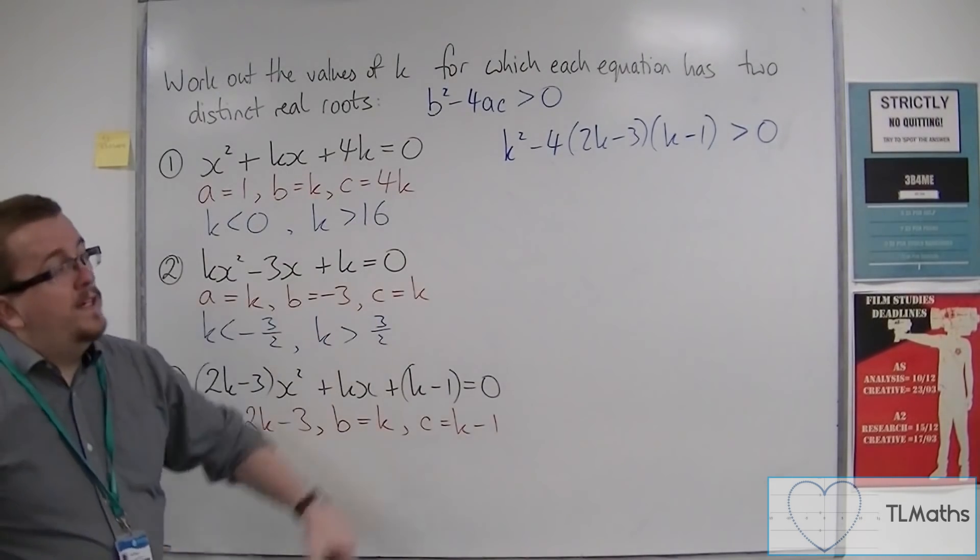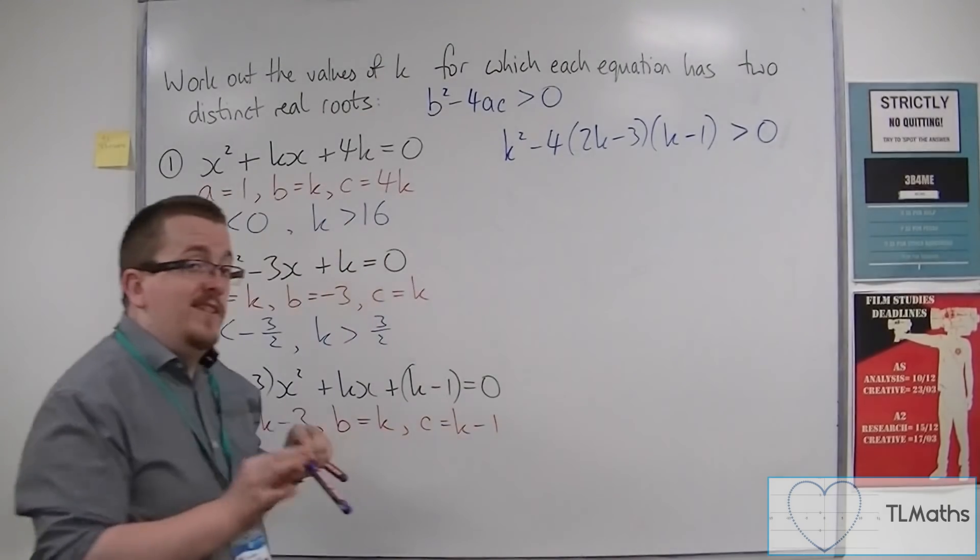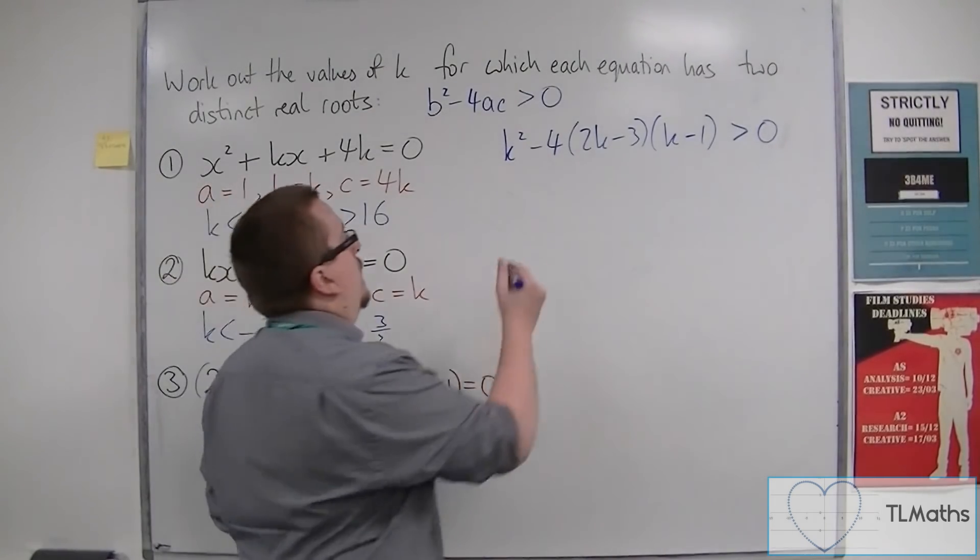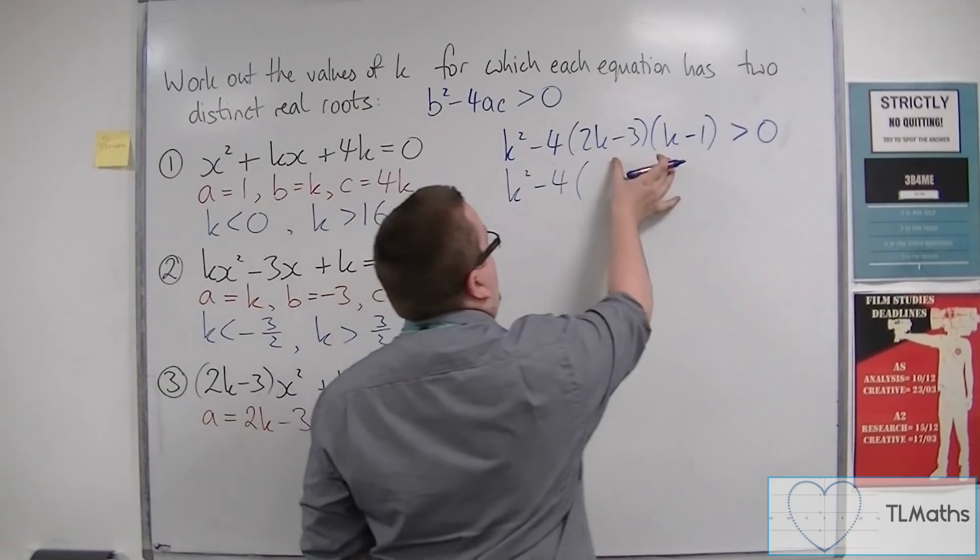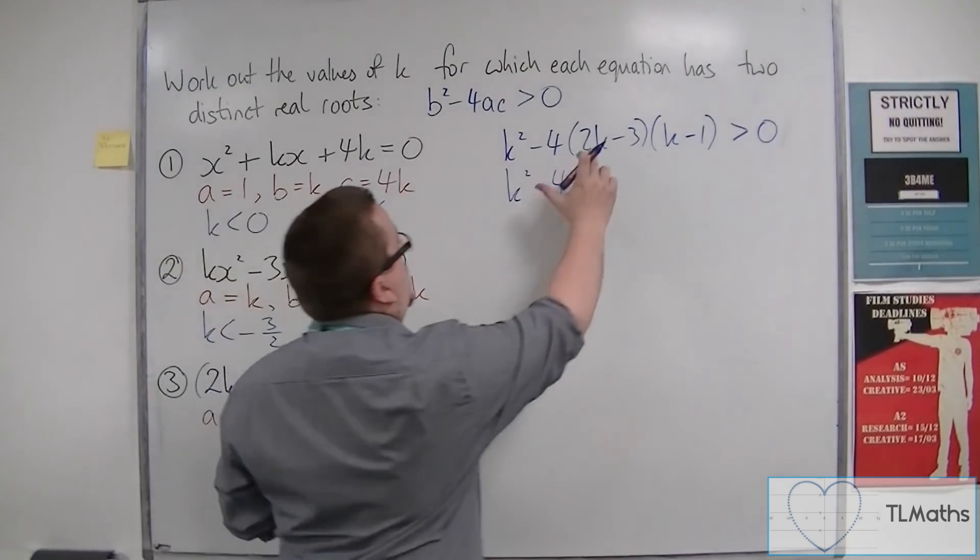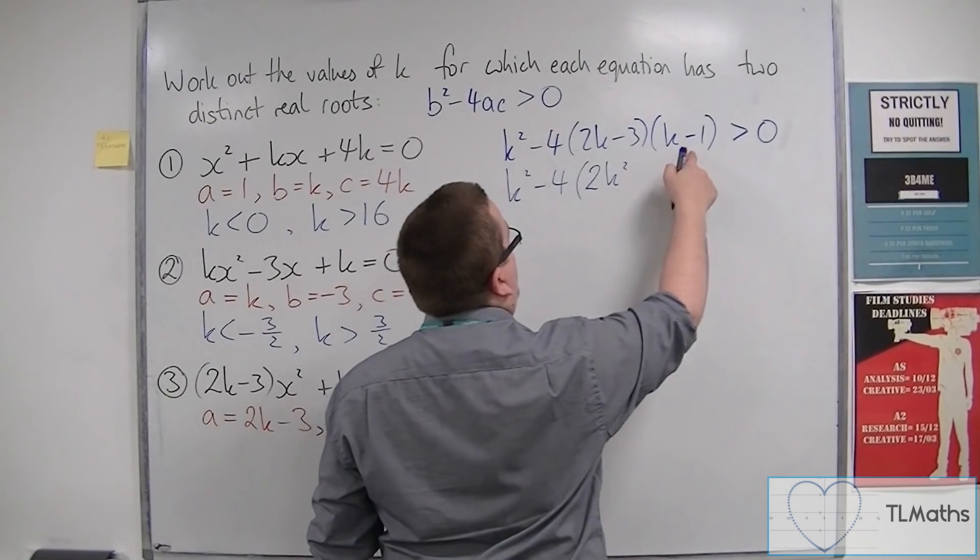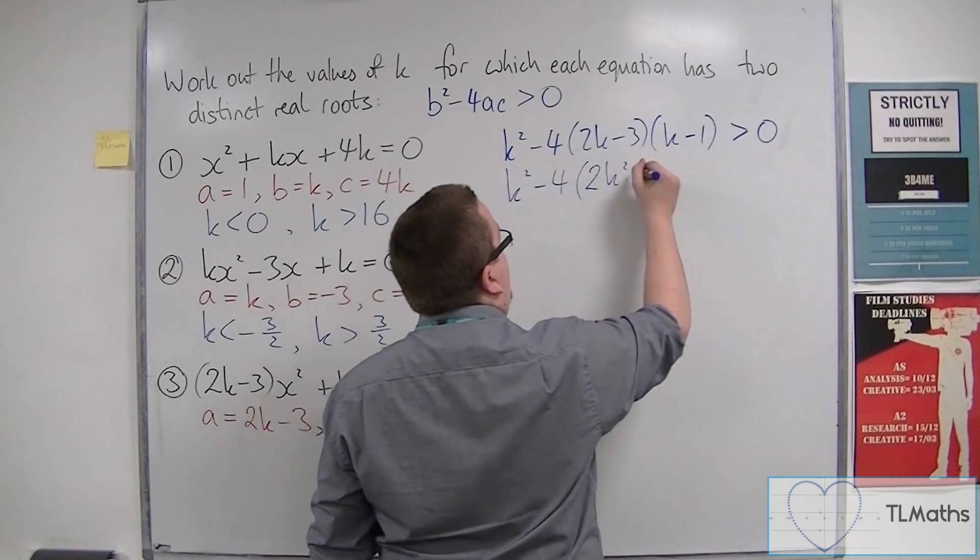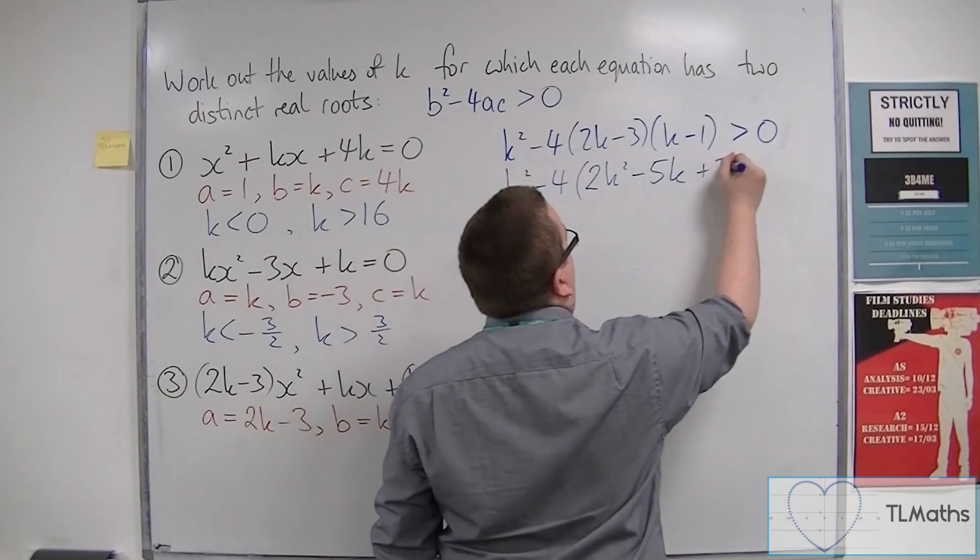Now, to go any further with that, you're going to have to expand the brackets. So I'm going to do this in stages. So I'm first of all going to expand the brackets here, rather than multiply 3 by minus 4 at the same time. So 2k times k, so 2k squared. 2k times minus 1, so minus 2k. Then minus 3k, so minus 5k altogether. And minus 3 times minus 1 is plus 3.